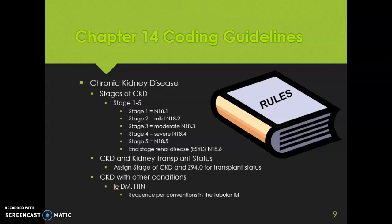End-stage renal disease is coded to N18.6. For a patient who already has a transplant in place, assign the current stage of the chronic kidney disease plus Z94.0 to show transplant status. When coding chronic kidney disease with other conditions like diabetes mellitus or hypertension, always sequence per the conventions in the tabular list, as there are instructions on which code to sequence first.